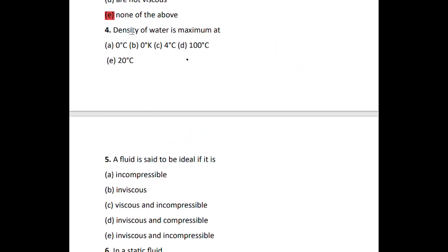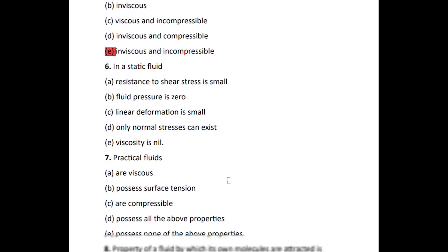Density of water is maximum at four degrees Celsius. So density of water is maximum at four degrees Celsius. Number five: a fluid is said to be ideal if it is inviscid and incompressible. Inviscid and incompressible, then the fluid is said to be an ideal fluid.